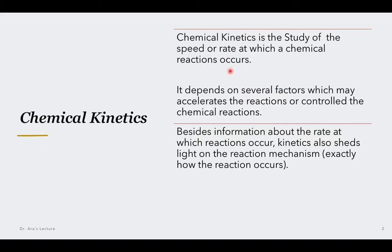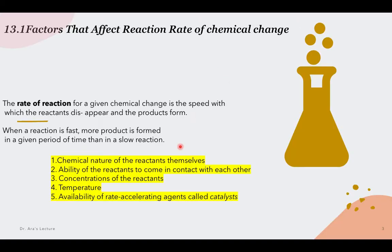The rate of a reaction for a given chemical change is the speed with which the reactants' concentration disappears — that is, reactant disappearance and product formation. The concentration of reactants decreases with time and the concentration of products increases as products form with time. Now let's check out what are the factors that affect the reaction rate.